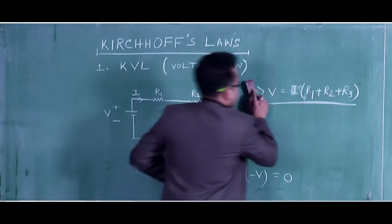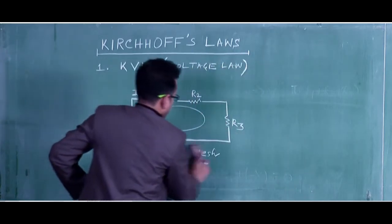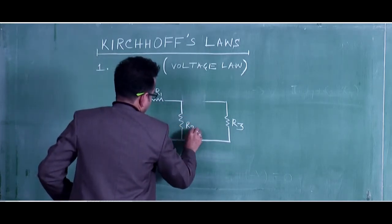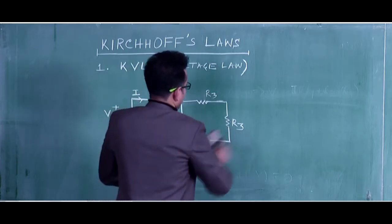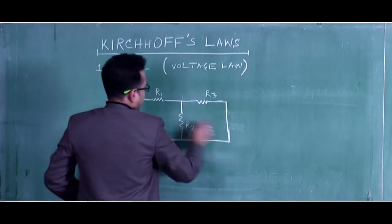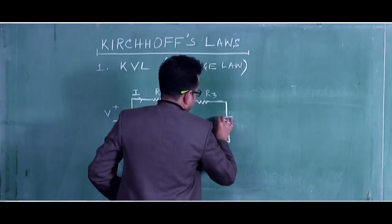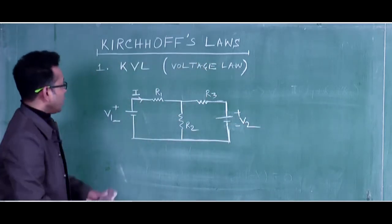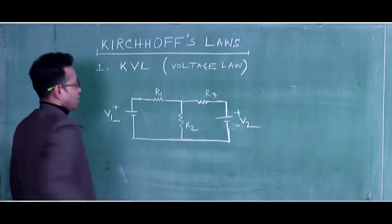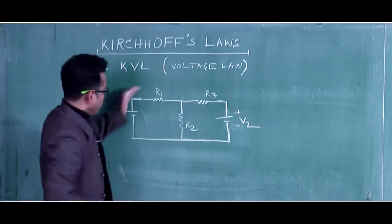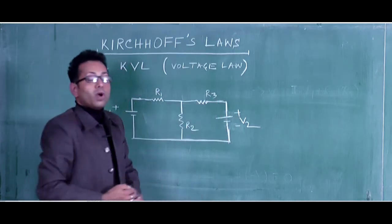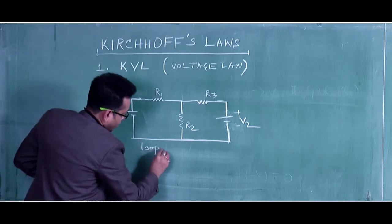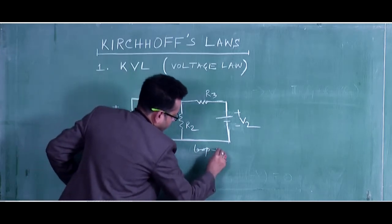If you consider another loop — let us consider a circuit like this — here it is R2, here it is R3, and here another voltage source is considered. This one is V2 and this one is now V1. So now this is the circuit. No current direction has been given, although we know current will flow, but the values of the loop currents are unknown. Two loops are there: this one is loop 1 and this one is loop 2.